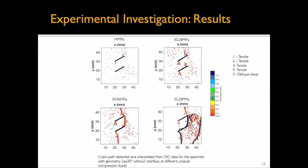Surface displacements were extracted from images taken during the experiments using the software DAVIS, and the data was then input into a MATLAB code which produced the displacement plots. Here is an example of crack path detected and interpreted from DIC data for a specimen without an interface. The color bar corresponds to crack aperture. In this case, tensile cracks originated at the flaw tips at around 14 MPa, and coalescence took place through the linkage of flaw tips by a shear crack at around 35 MPa.